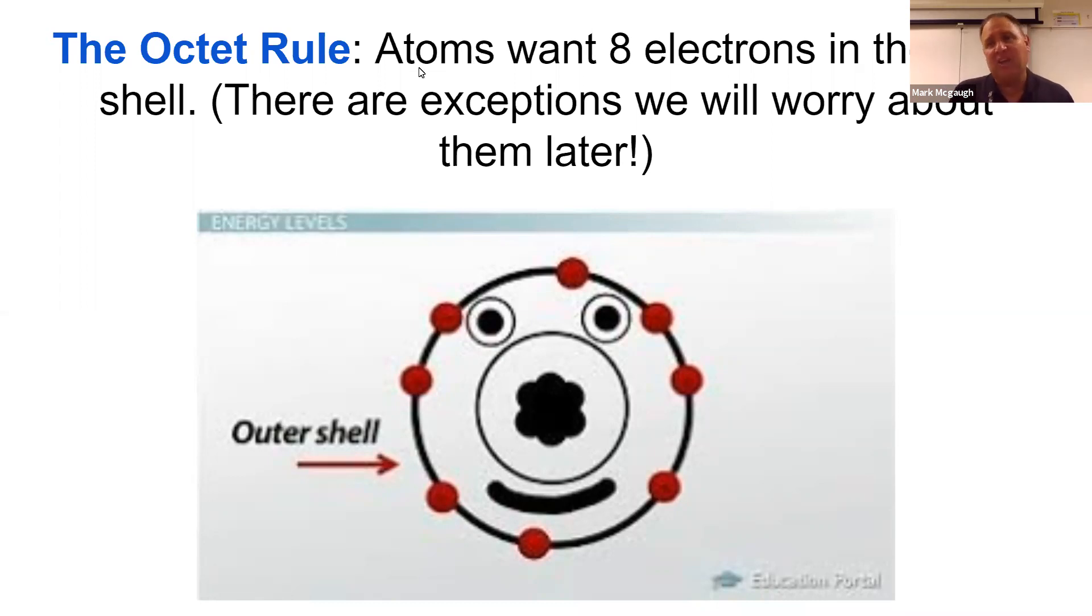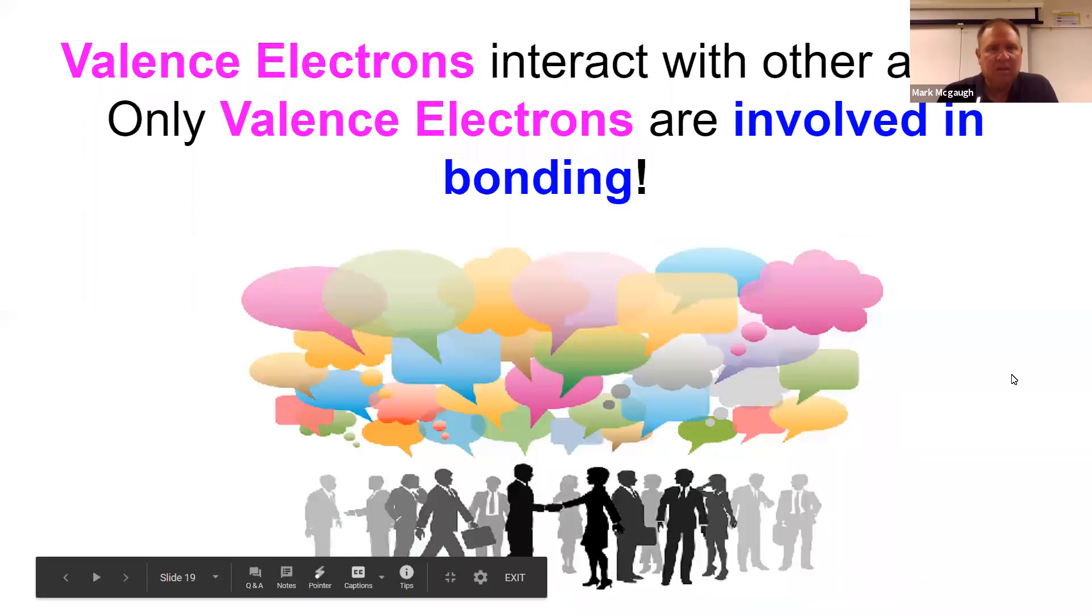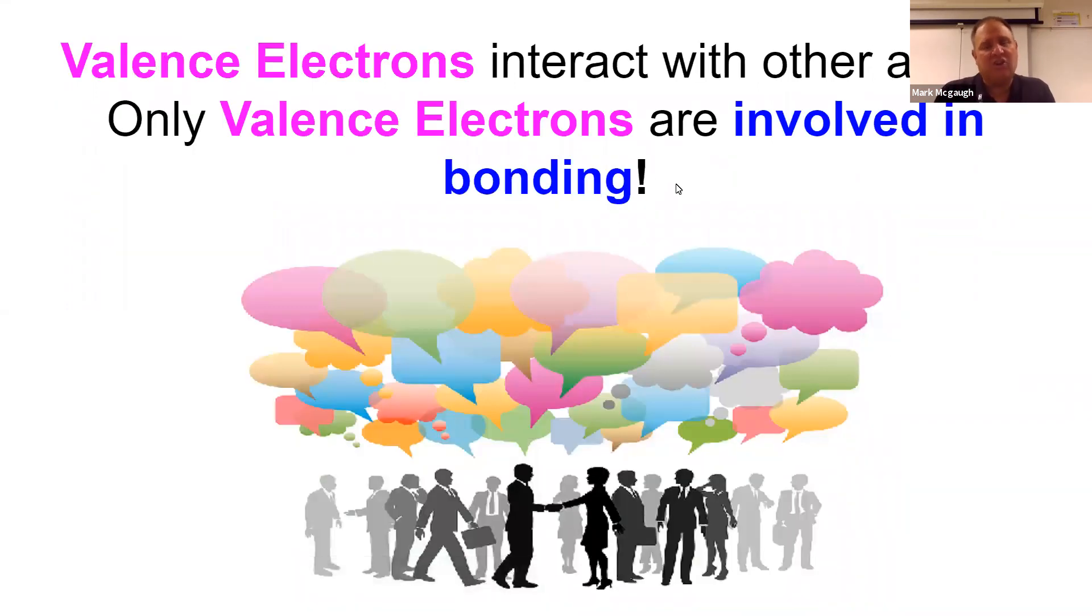Out of 114 elements, 110 of them want eight valence electrons: one, two, three, four, five, six, seven, eight valence electrons. We're going to talk about a lot this semester because they're important.